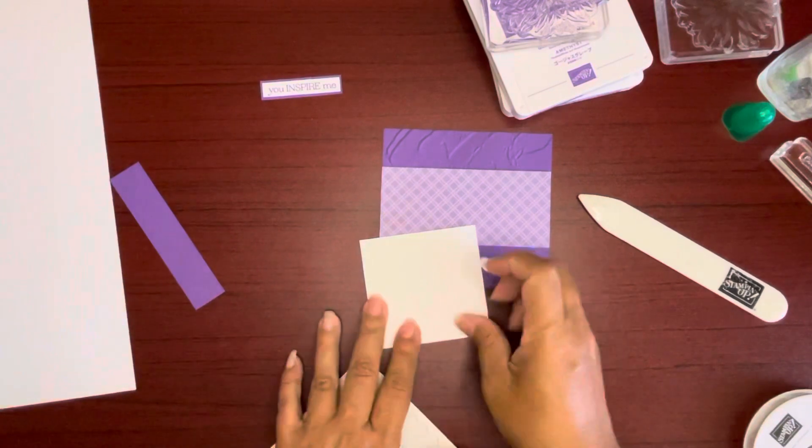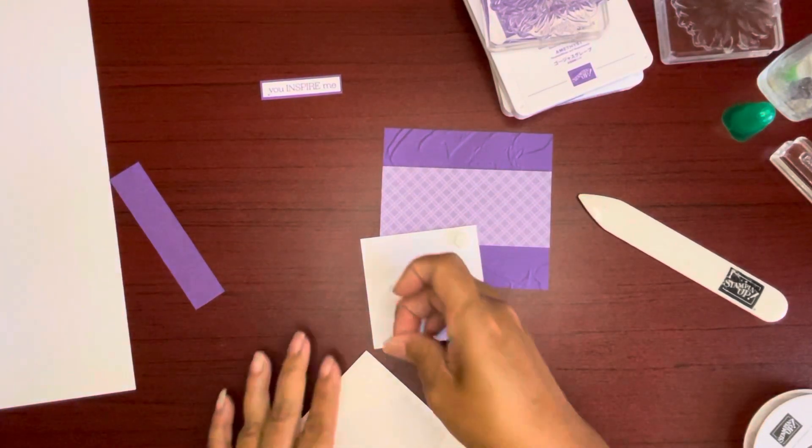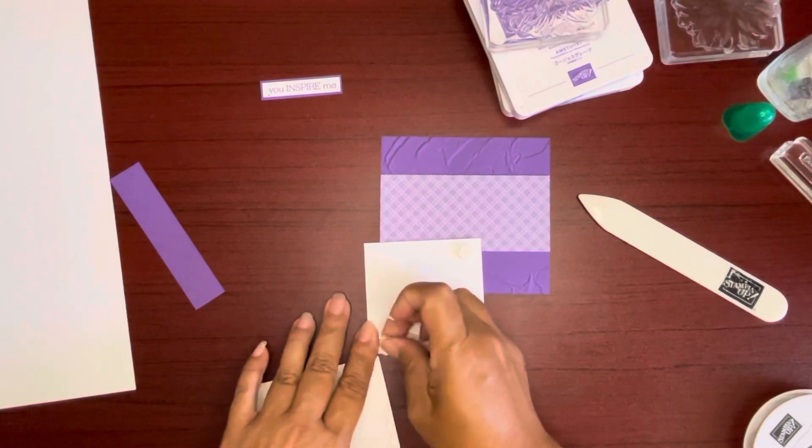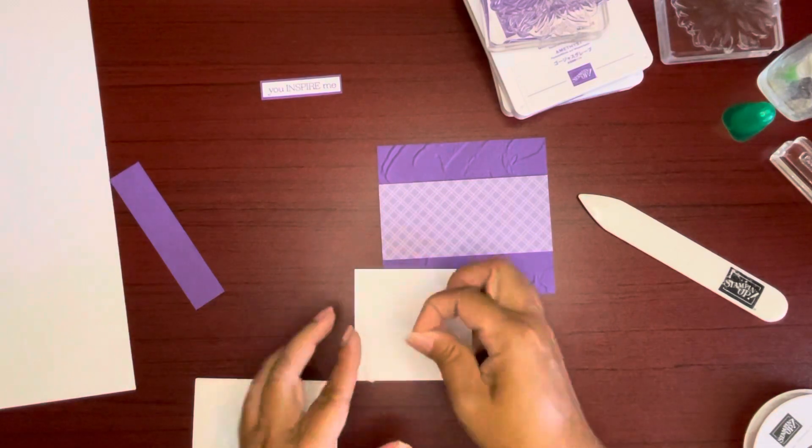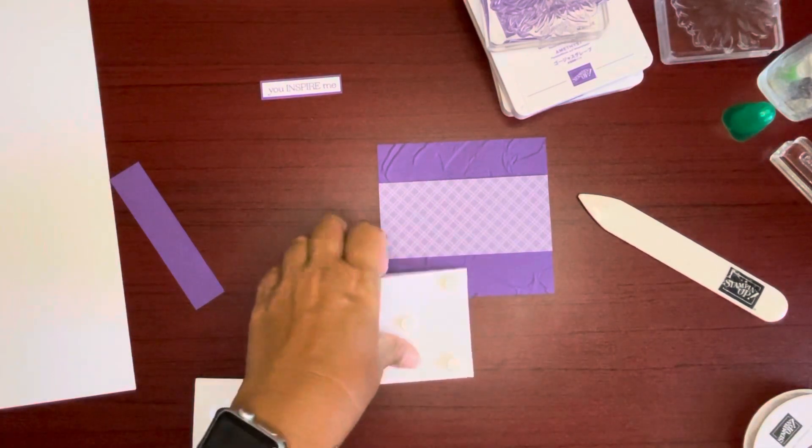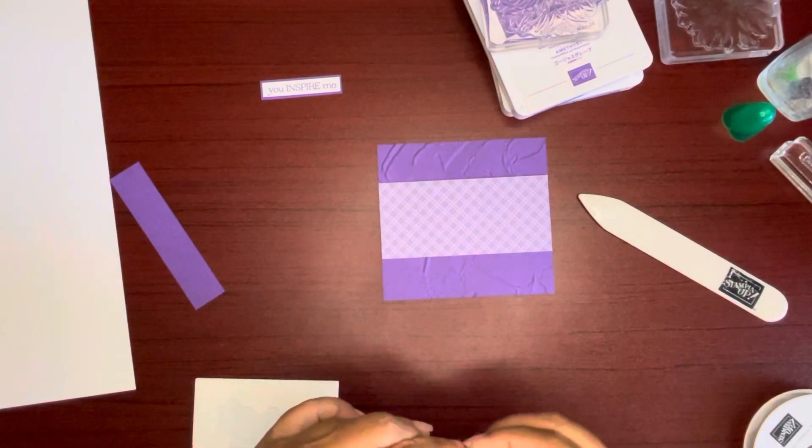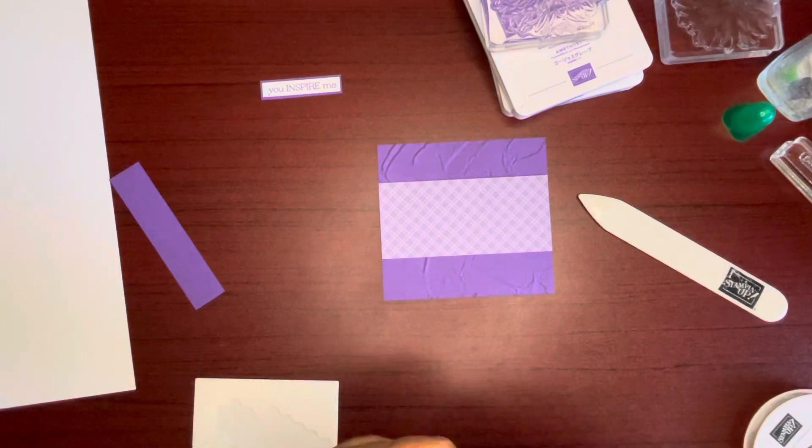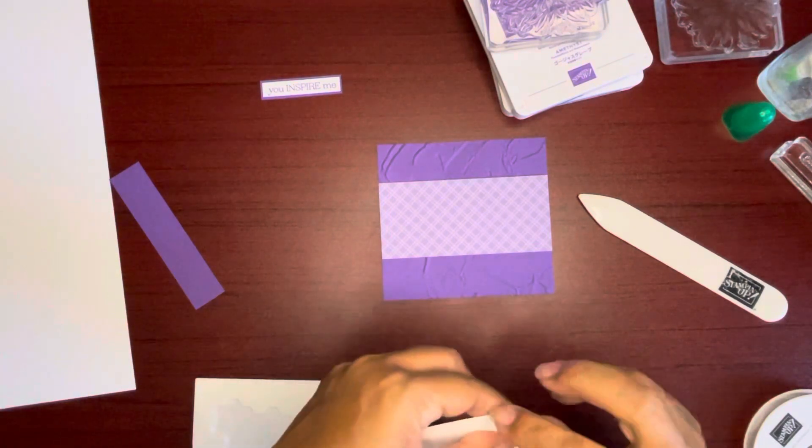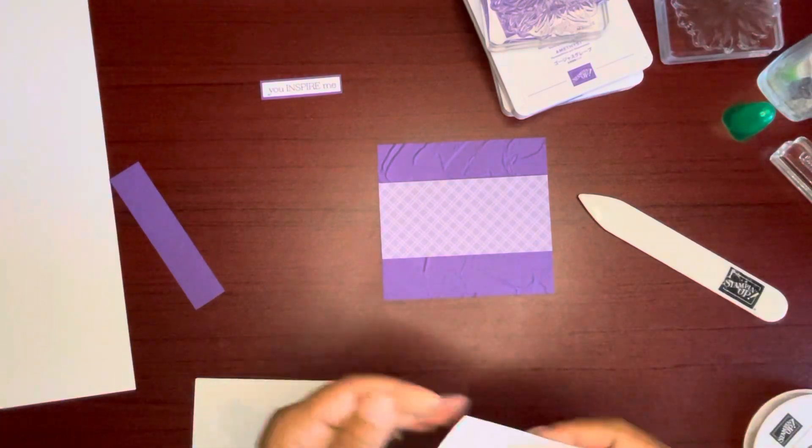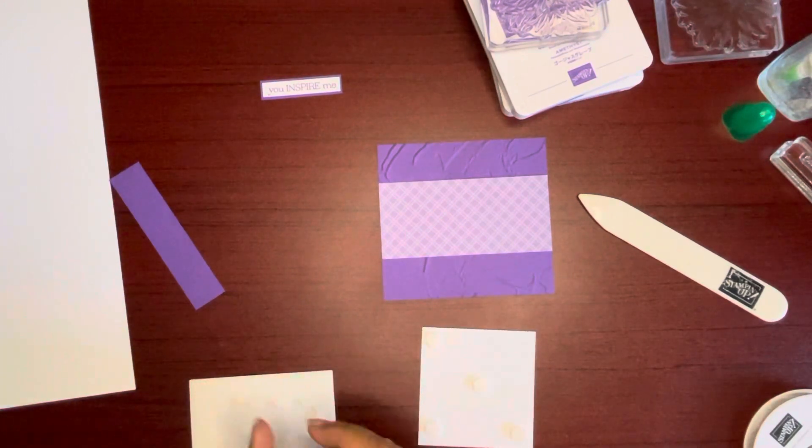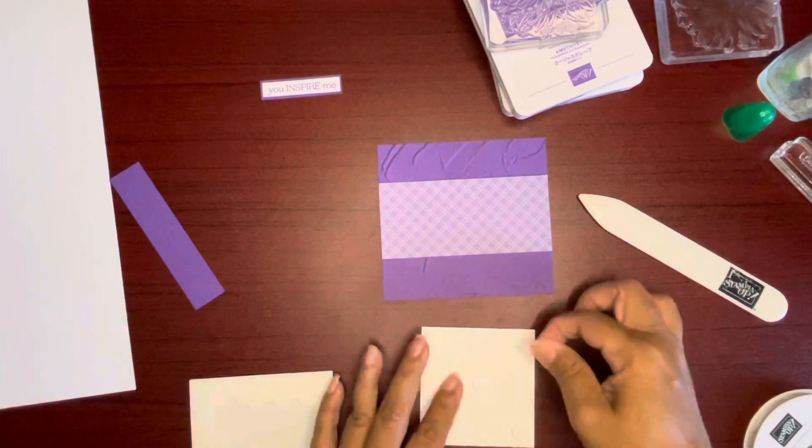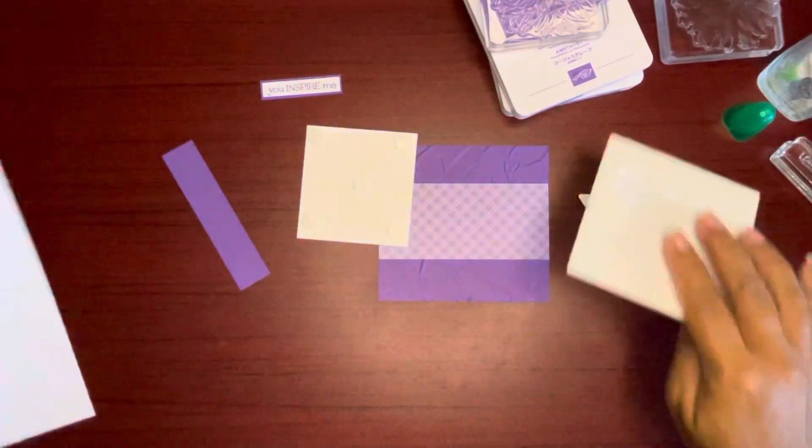This will get some Stampin' Dimensionals. I like to put it in the four corners and one in the middle. Oh, that one had stuck so good. But it's sticking off. I have to peel that off. It's always something, huh? I'm trying to peel. Oh gosh, I'm breaking the cardstock. I'm sure it'll be fine. Did you see that? How sticky this is? Rips off the cardstock. Sticks to my fingers.